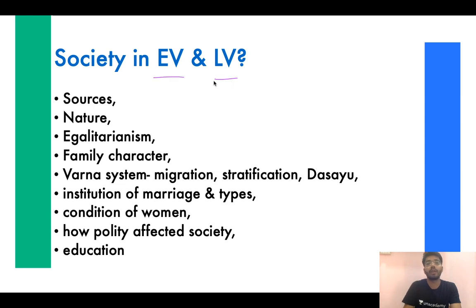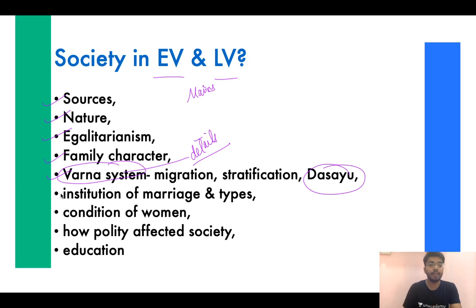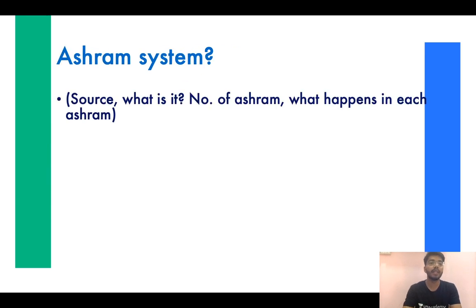Society has to be studied in detail, especially for mains. We will cover sources, the nature of society, how the egalitarian character changed, how the family structure changed from Early to Later Vedic period, and the Varna system in great detail — for both prelims and mains. When was migration allowed, when did it end, how did social stratification evolve, and how the concept of Dasyu emerged. The institution of marriage will be discussed — there were 8 types of marriages, which is a source of prelims questions. The condition of women in Early versus Later Vedic period, its effect on society, education, and the Ashrama system with all four Ashrams will also be covered.